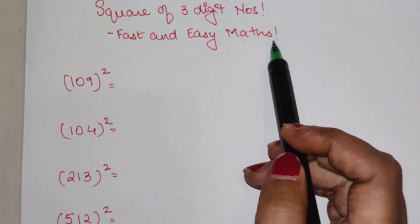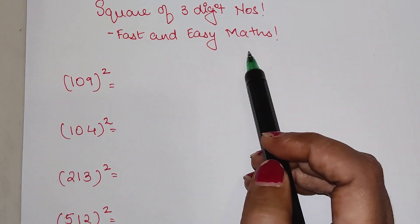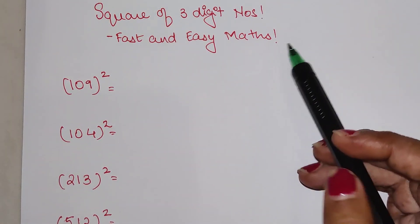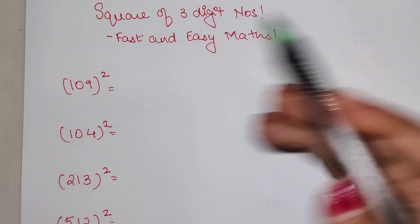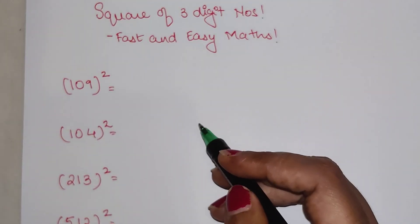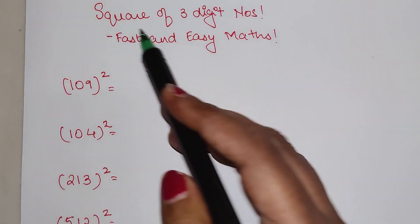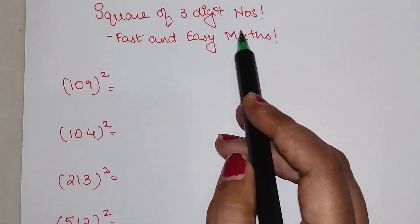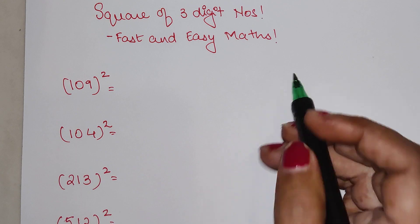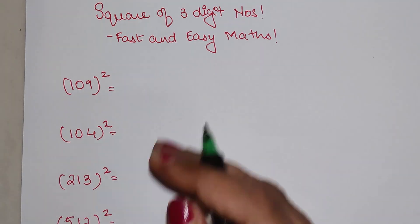Welcome everyone to my channel, Fast and Easy Maths, which is dedicated to giving you tips and tricks related to mathematics. Today we are going to understand how to find the square of a three-digit number literally orally.